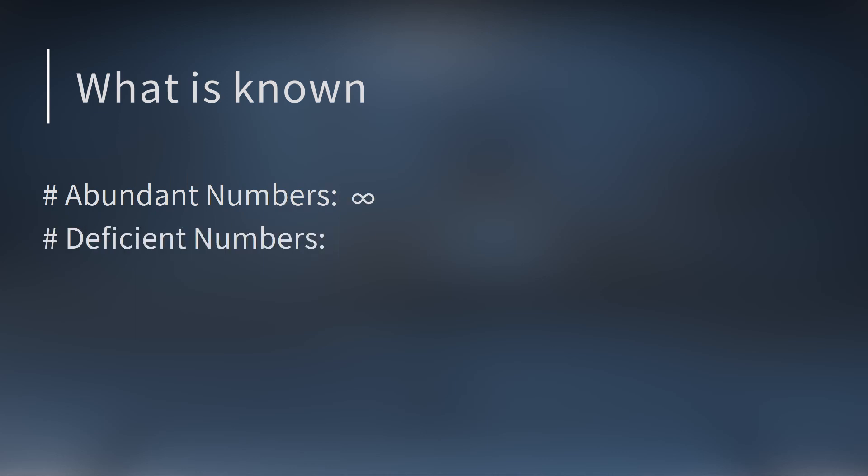This also brings us to an interesting spot. We're just about to the point where no one knows much more than what we've already seen here. We know there's an infinite number of abundant numbers and an infinite number of deficient numbers. But what about perfect numbers? People think there's an infinite number, but we don't know.